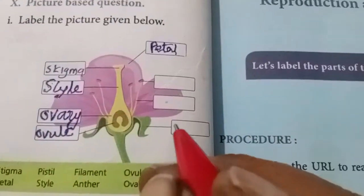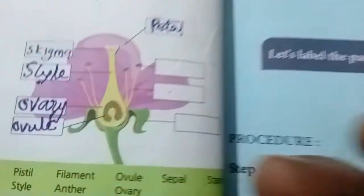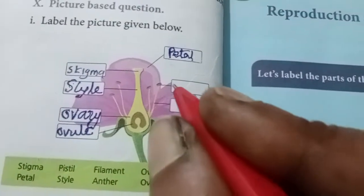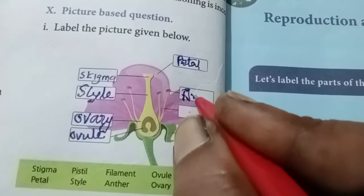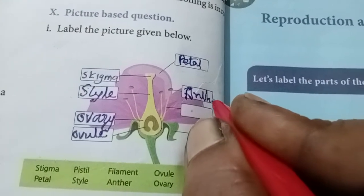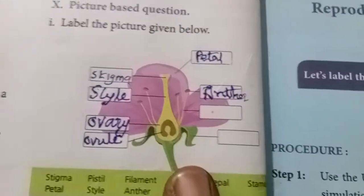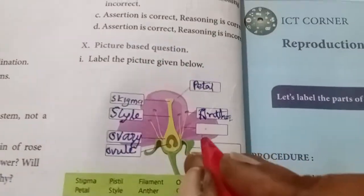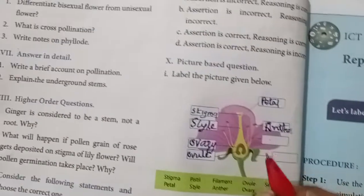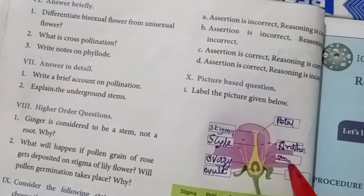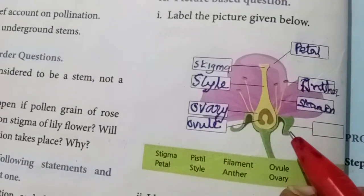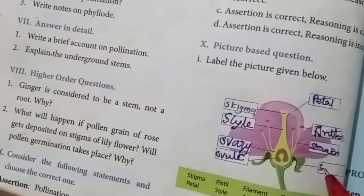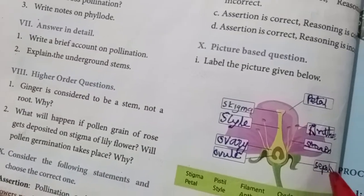The next part is the petal of the flower — P-E-T-A-L. The bead-like structure is known as the anther — A-N-T-H-E-R. The base of the anther is known as stamen. The green part of the flower is the sepal — S-E-P-A-L.